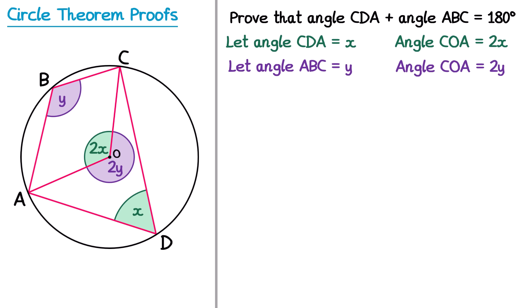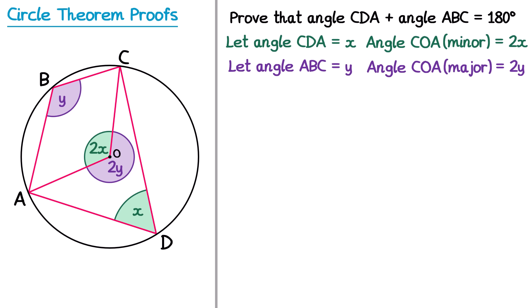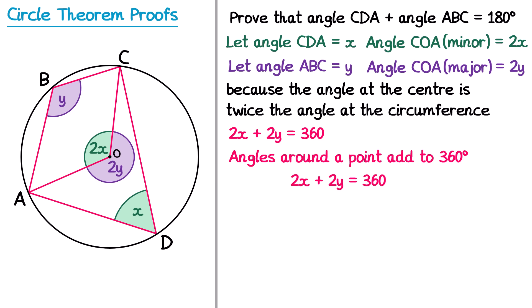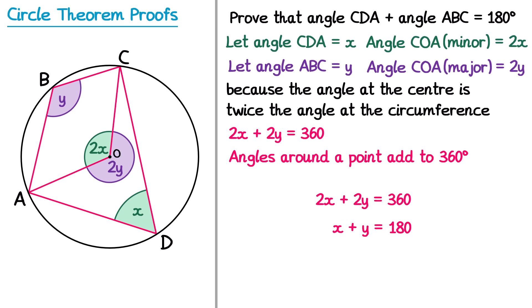To distinguish between the two angles at O, we call one the minor angle and one the major angle. Both angles are around a point, so 2X plus 2Y equals 360; the reason is angles around a point add to 360 degrees. Dividing both sides by 2 gives X plus Y equals 180. Since X is angle CDA and Y is angle ABC, angle CDA plus angle ABC equals 180, which is exactly what we were trying to prove.